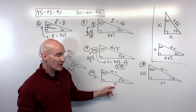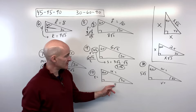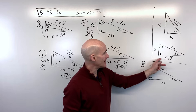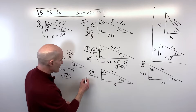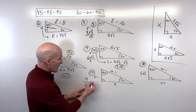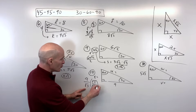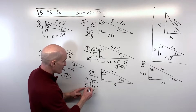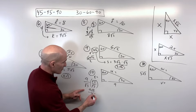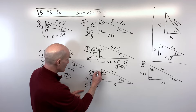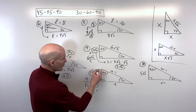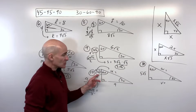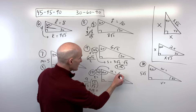For number ten — a little more challenging — they're giving us the side across from the 60-degree angle, the longer leg, which is 9. To go from the longer leg to the shorter leg, divide by √3. We don't want √3 in the denominator, so we rationalize: 9 times √3 over √9, which is 3. The 9 and 3 reduce to give 3√3. The hypotenuse is just twice the short leg: 3√3 times 2 is 6√3.